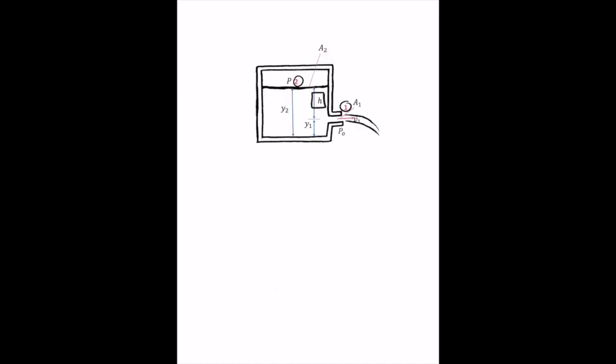Suppose there is a tank containing a liquid of density rho that has a hole at its side. You can use Bernoulli's equation to show that the speed of the liquid as it leaves the hole is a function of the liquid height above the hole. If you apply Bernoulli's equation between points 1 and 2, you will find that this speed is equal to square root of 2gh. This is the same speed acquired by an object freely falling a distance of h. This is known as Torricelli's law.